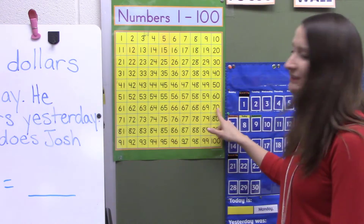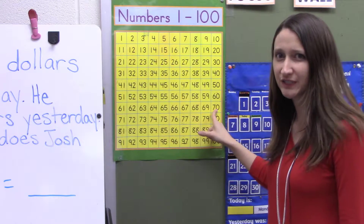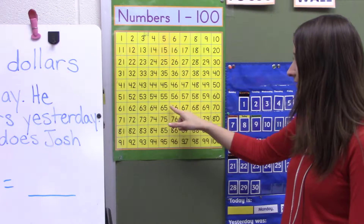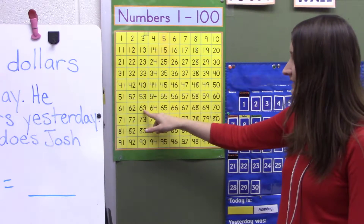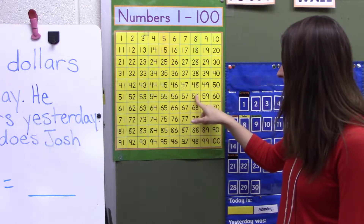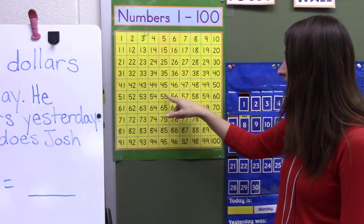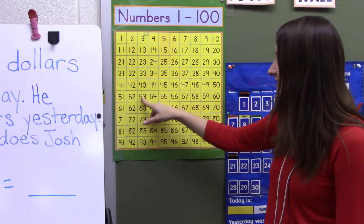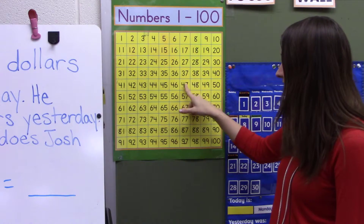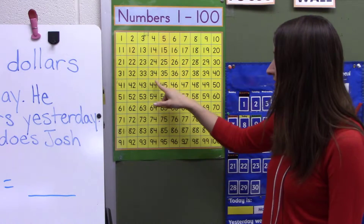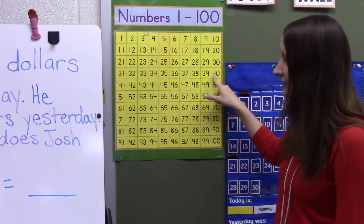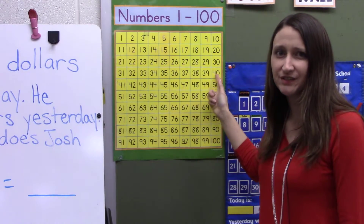First I'm going to start at the number 70, and I'm going to count backwards 30. 1, 2, 3, 4, 5, 6, 7, 8, 9, 10, 11, 12, 13, 14, 15, 16, 17, 18, 19, 20, 21, 22, 23, 24, 25, 26, 27, 28, 29, 30. So I know my answer is 40.